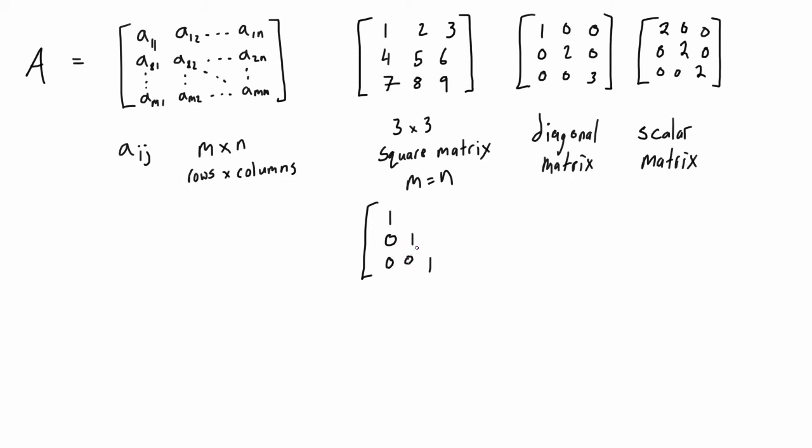In a unique case where all of the diagonals equal one and every other value is zero, we call this the identity matrix. Those are just some definitions you're going to be seeing in future videos and I just wanted to get those out of the way.